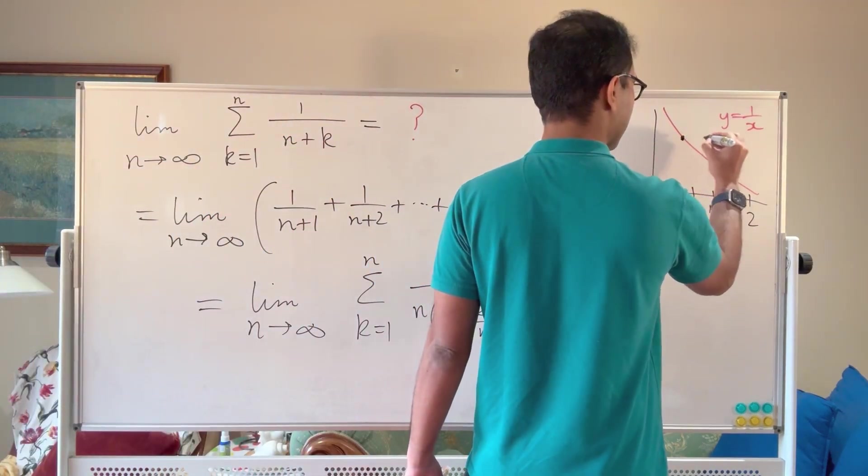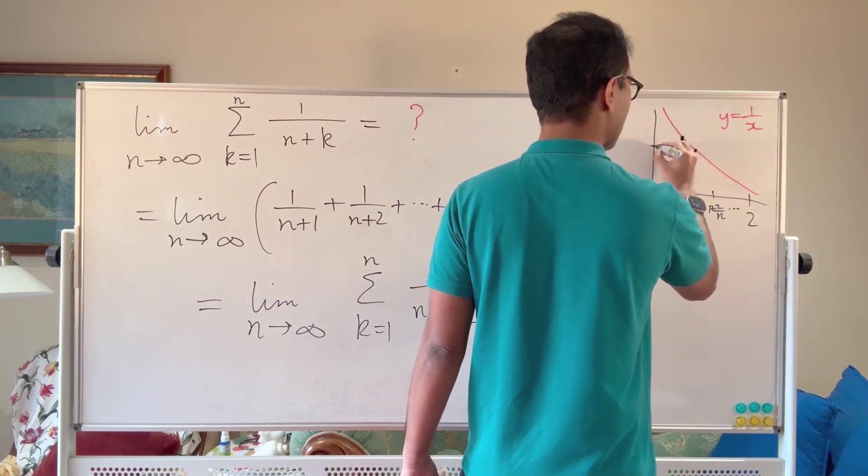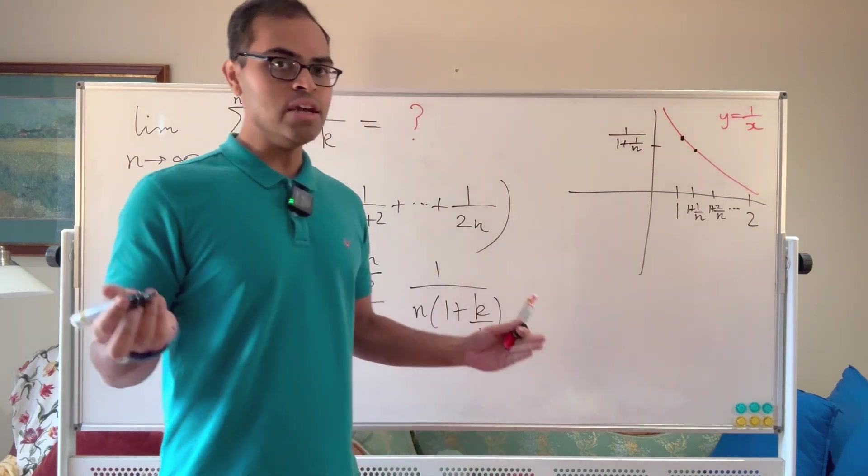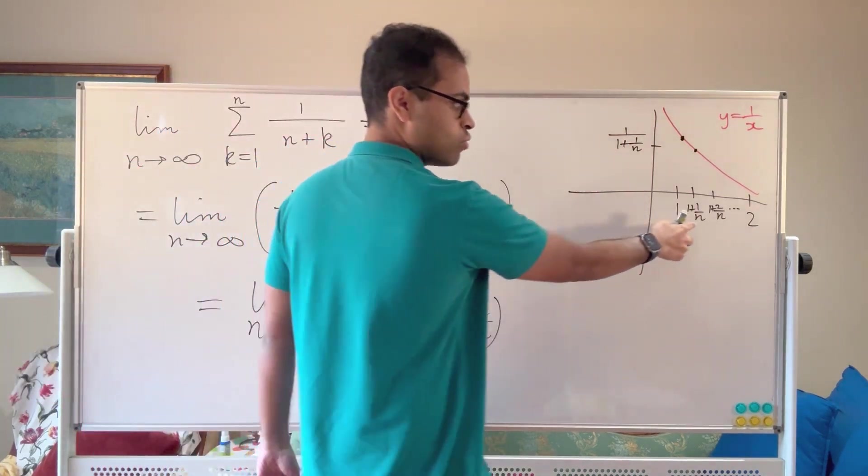So at 1, you've got the y coordinate on the graph. Here you've got the y coordinate is going to be 1 over 1 plus 1 over n, right, because y equals 1 over x and x is 1 plus 1 over n.